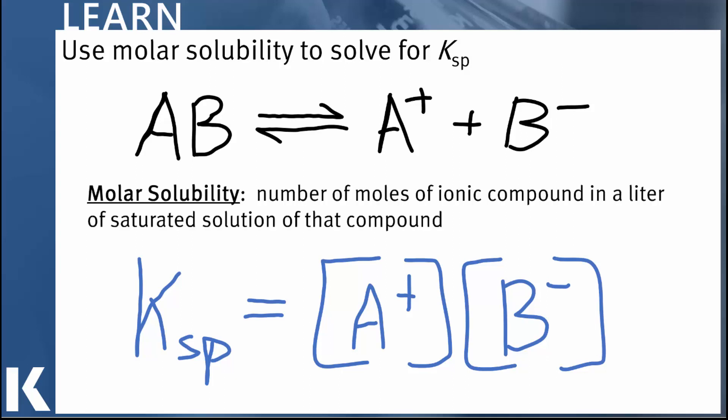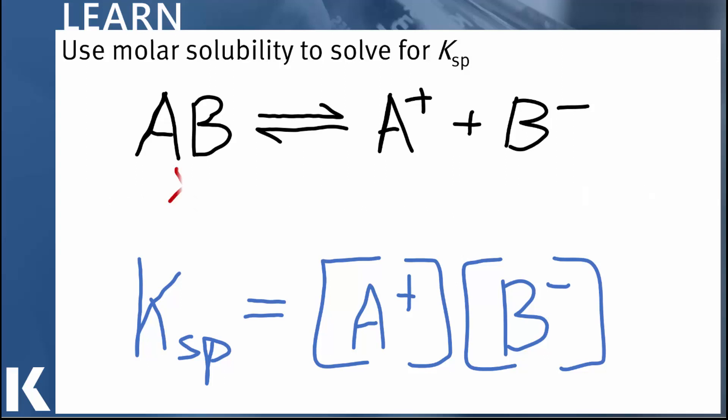If you remember that molar solubility is the number of moles of an ionic compound, AB in this case, that goes into solution when that solution is saturated, we can use X to stand for that molar solubility. So X is the number of moles of AB that goes into solution at equilibrium. But looking at the stoichiometry of this expression, you can see that for every mole of AB that dissolves, we're going to get one mole of A and we're going to get one mole of B-minus. That's just what the stoichiometry says. It's one to one.